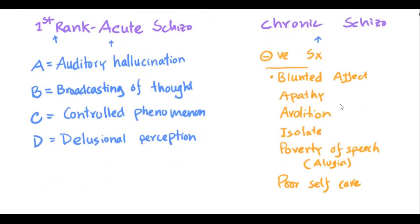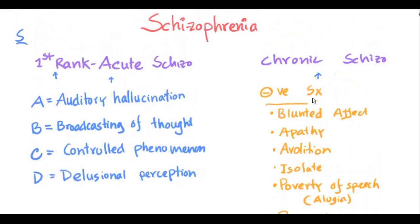Apathy — you don't feel anything. Avolition — you don't have the motivation to do anything. Social isolation, poverty of speech or alogia, and poor self-care. Those are the features of chronic schizophrenia.